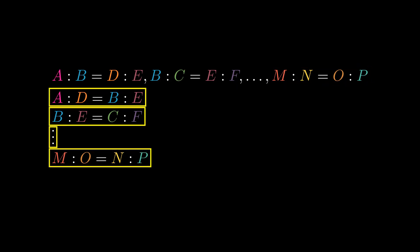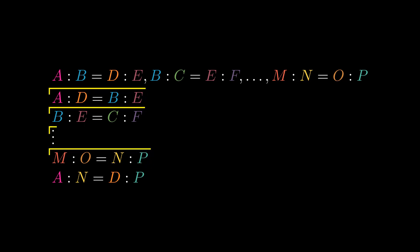We thus have a chain of proportionality that shows that A to N is proportional to D to P, or that the ex-equality ratios are proportional. A to D.